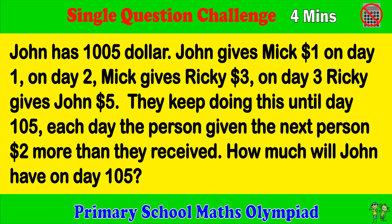Primary school maths olympiad single question challenge. Try to complete the question within four minutes. John has $1005. John gives Mick one dollar on day one. On day two, Mick gives Ricky three dollars. On day three, Ricky gives John five dollars. They keep doing this until day 105, each day the person giving the next person two dollars more than they received.